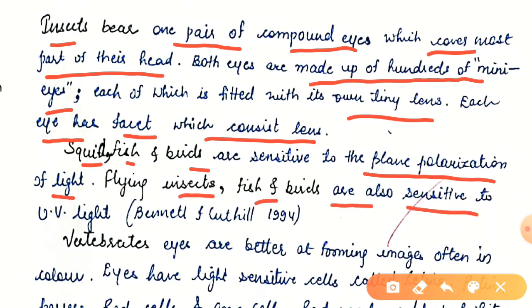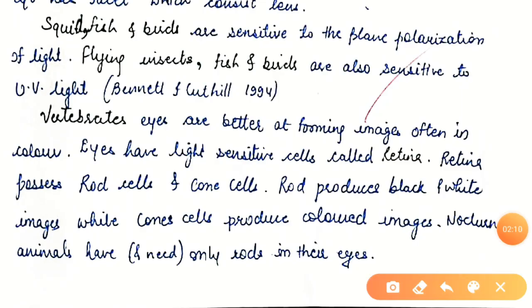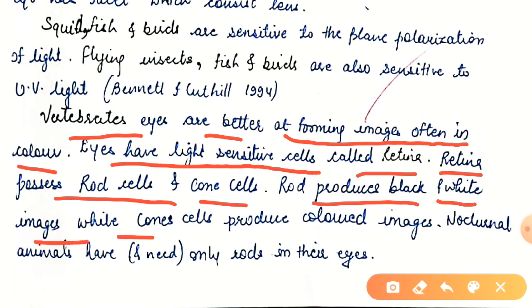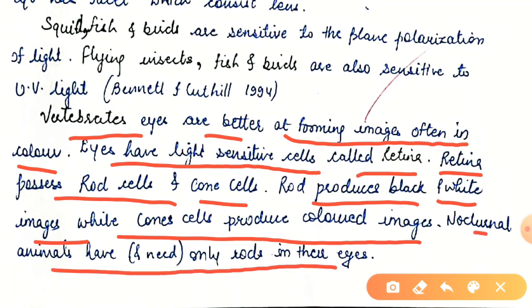Vertebrate eyes are better at forming images, often in color. Eyes have light-sensitive cells — the retina possesses rod cells and cone cells. Rod cells produce black and white images while cone cells produce colored images. Nocturnal animals have only rods in their eyes. So there are two kinds of cells present in the retina: rod cells and cone cells.